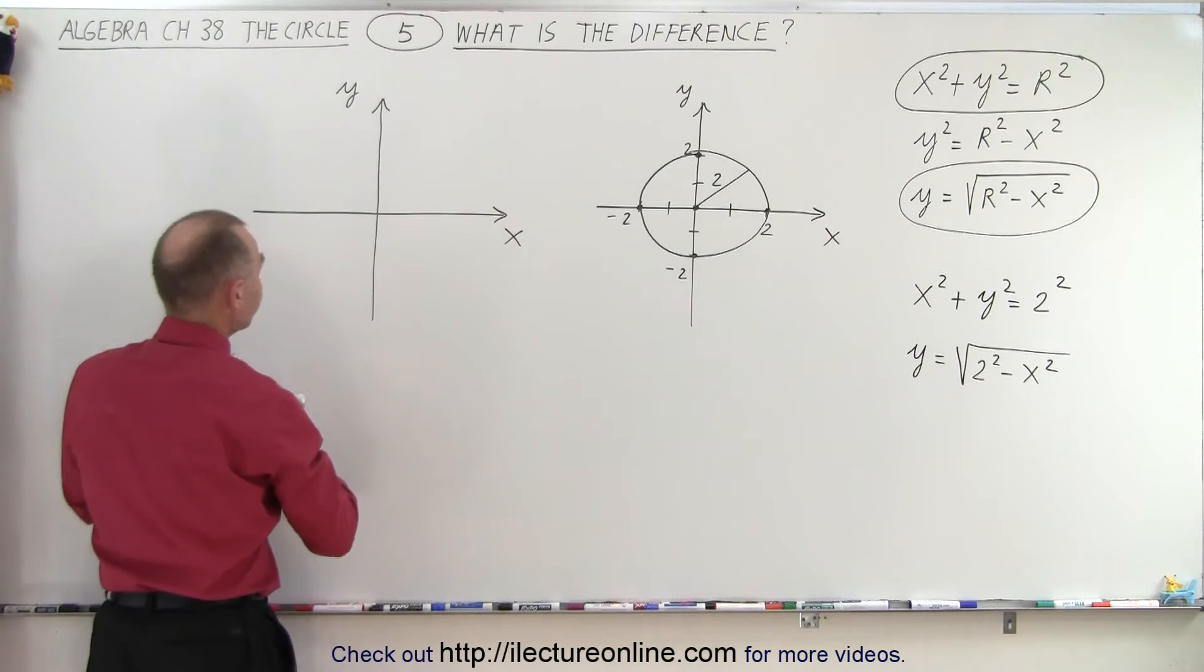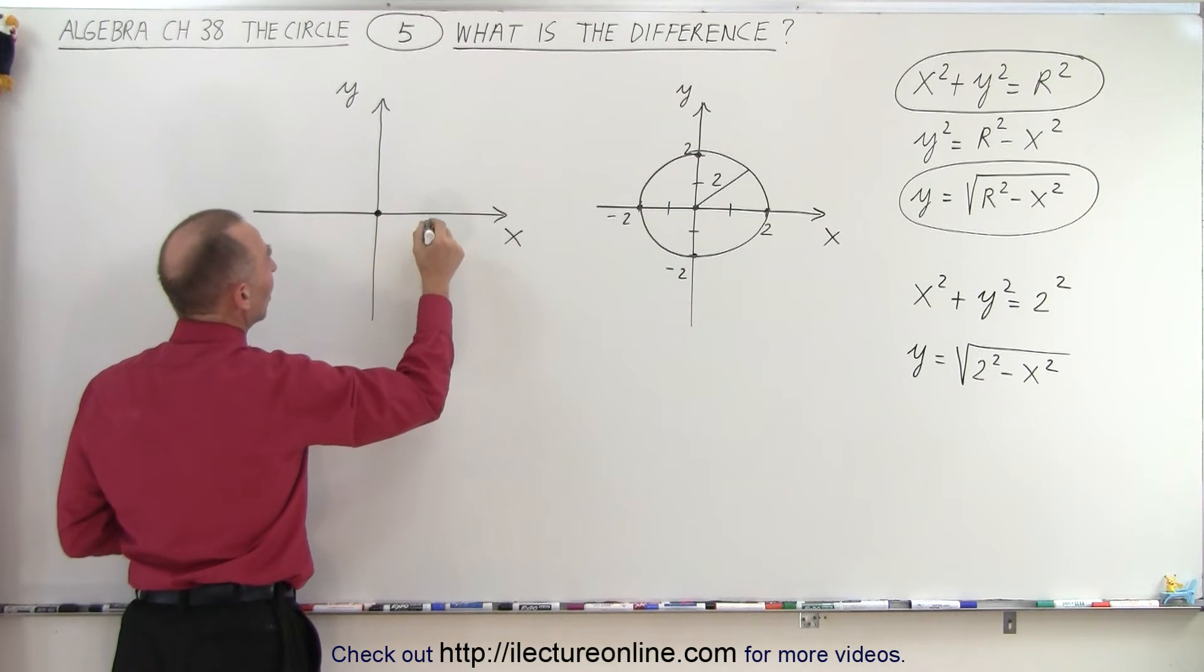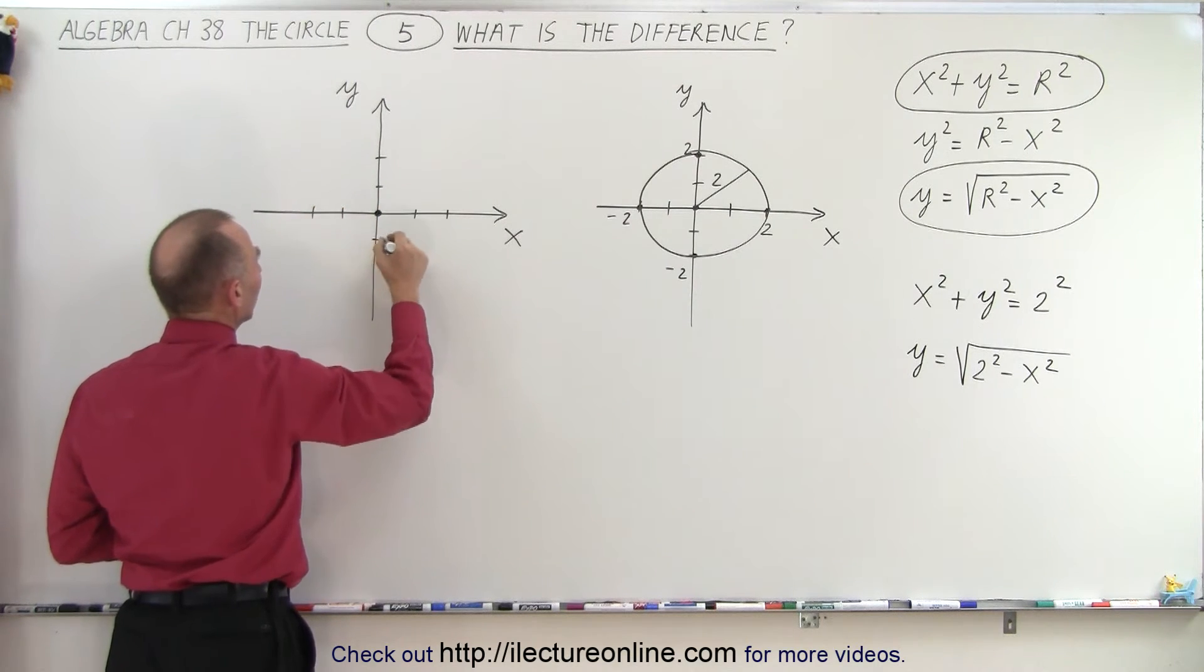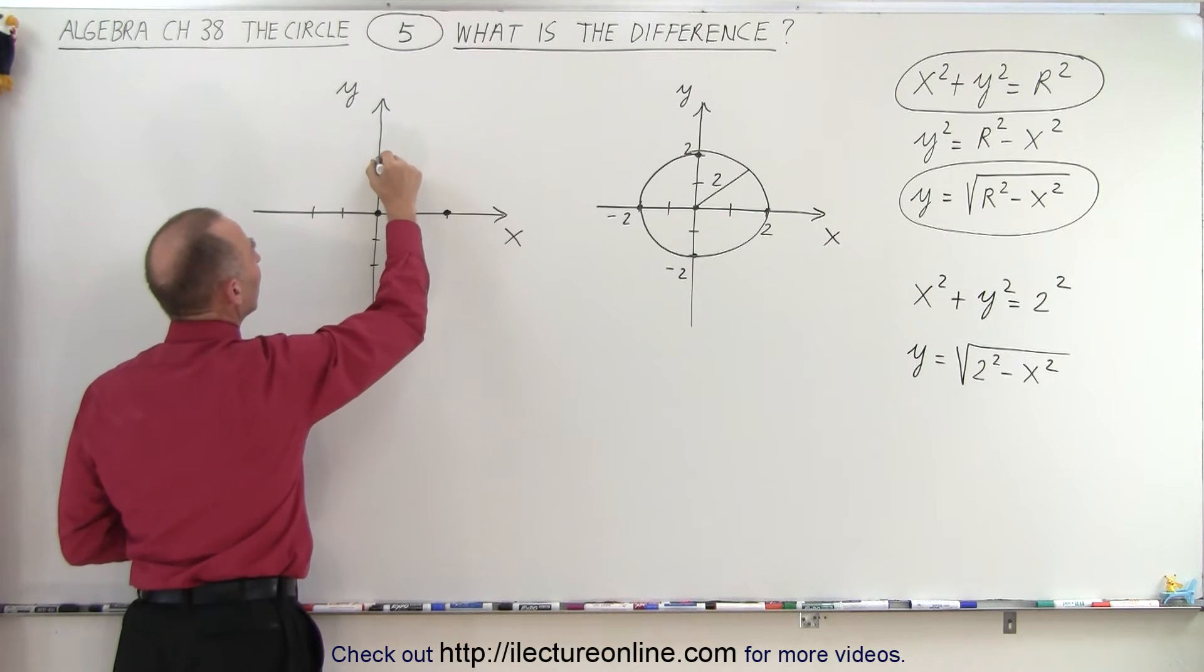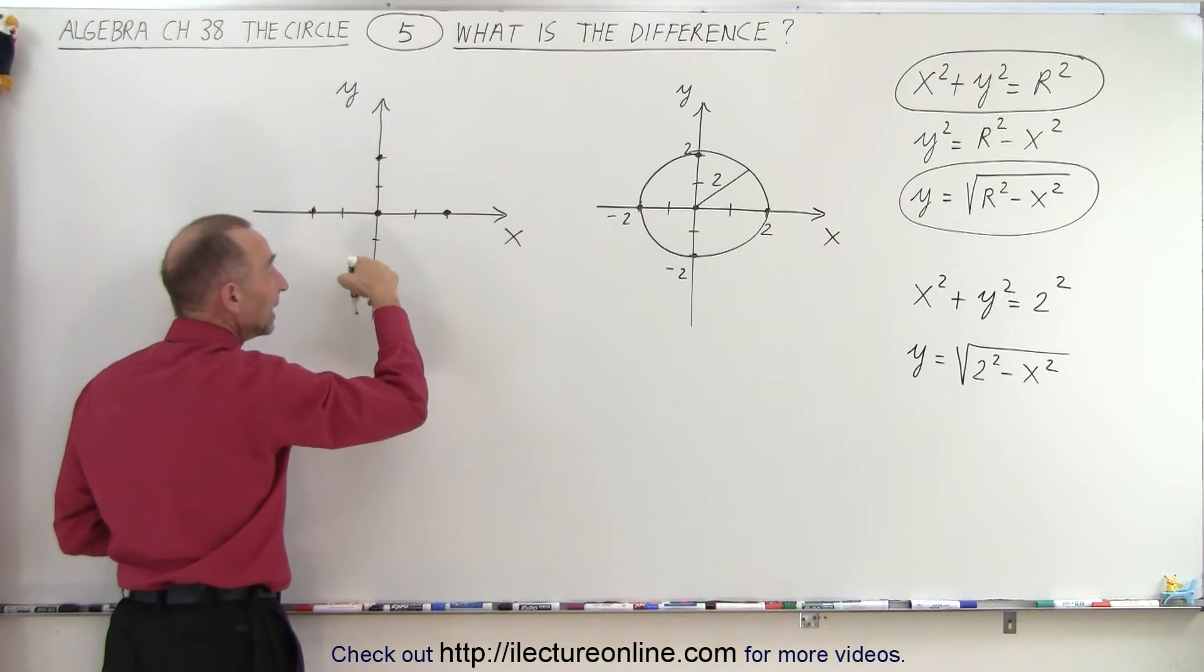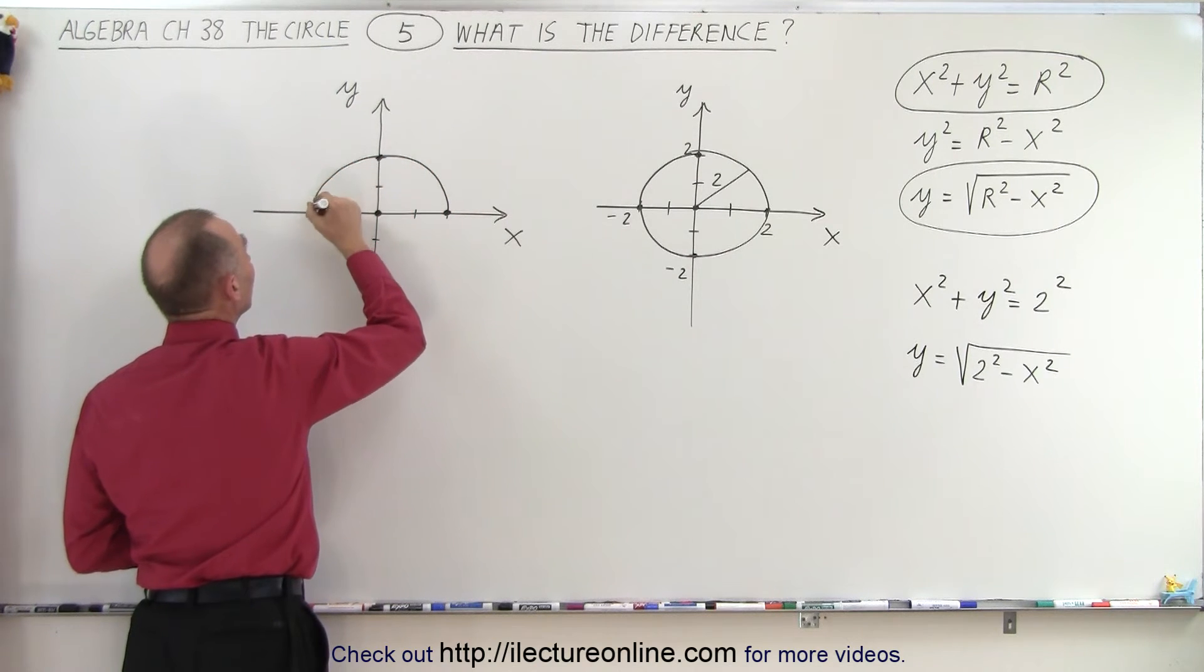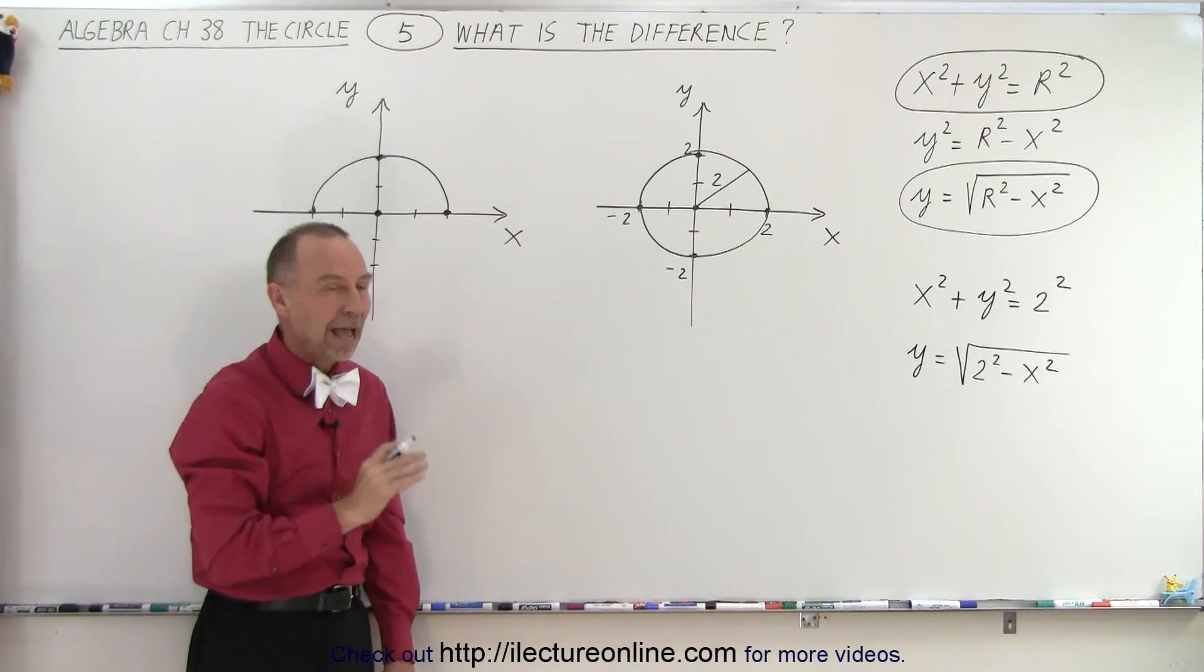So therefore, again, we find the center at the origin. We draw 1, 2 to the right, 1, 2 going up, 1, 2 to the left, 1, 2 down. But we can only have a point here, here, and here, not down below because that would make y negative. And y can never be negative according to that. So the equation represents only the top half of the circle, not the bottom half.